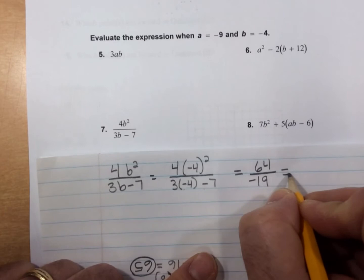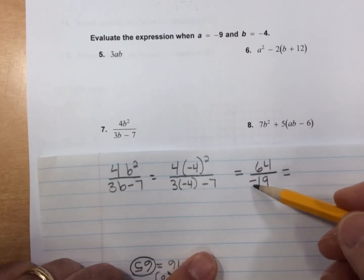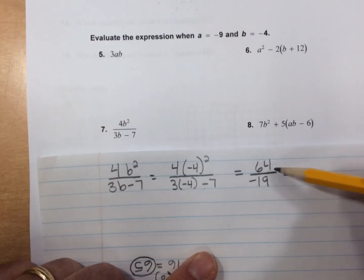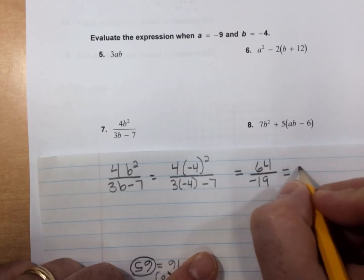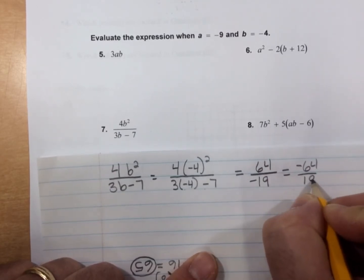And the only thing we can really do to that is not have the negative in the denominator. We move it up to the numerator. Mathematically, we could just multiply top and bottom by -1. It just looks like we just move it to the top here. So -64 over 19.